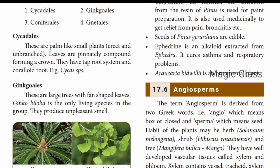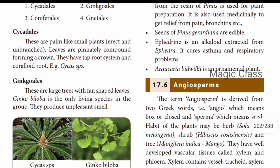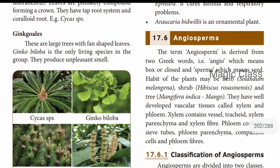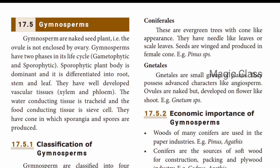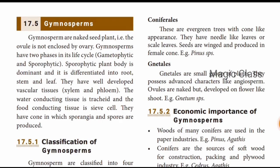Ginkgales are large trees with fan-shaped leaves. Example: Ginkgo biloba - this is the only species in this group and it produces an unpleasant smell. Coniferals are evergreen trees with cone-like appearance and needle-like leaves; seeds are winged and produced in the female cone. Example: Pinus. Gnetales are a small group of plants that possess advanced characters like angiosperms; ovules are naked but developed on flower-like shoots. Example: Gnetum.